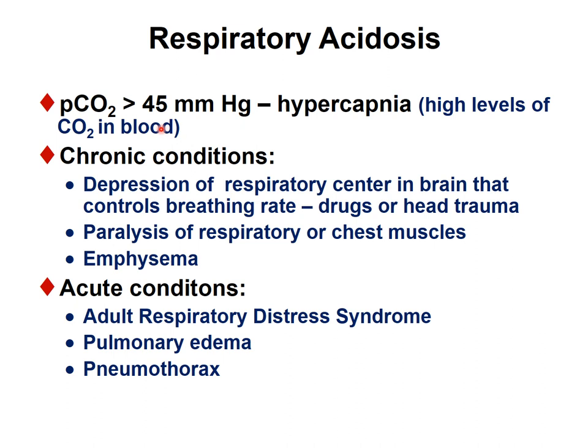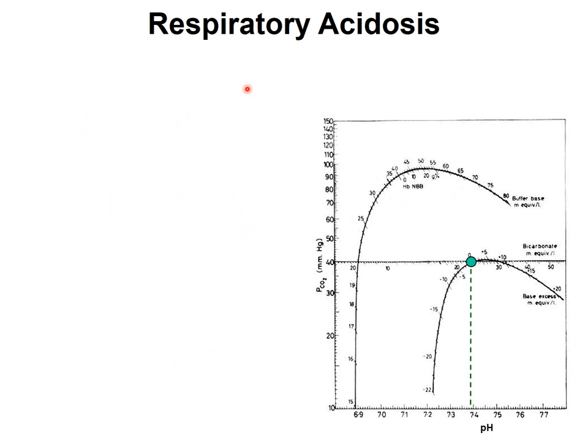Respiratory acidosis: PCO2 above 45 mmHg is hypercapnia. Causes include respiratory center failure, muscle paralysis, emphysema, or acute conditions such as adult respiratory distress syndrome — where ventilation-perfusion mismatch occurs — pulmonary edema, and pneumothorax. All can cause respiratory acidosis.